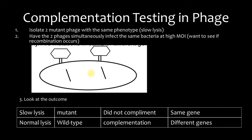If you're confused, look back at your notes or shoot me an email. So — complementation testing in phage. How do we do this? Remember from the first slide: we're going to isolate two mutant phage that have the same phenotype, because we want to see if it's caused by the same gene or different genes.